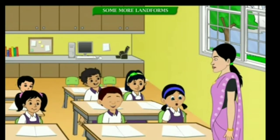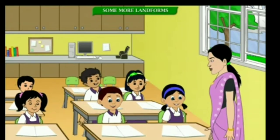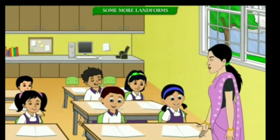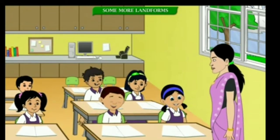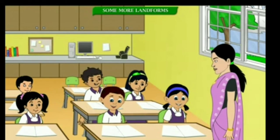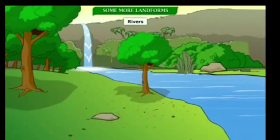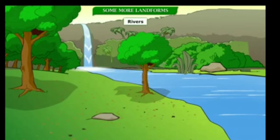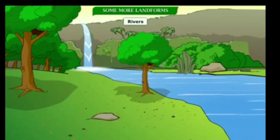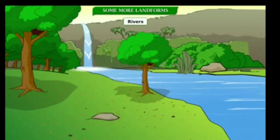Where do rivers start from? Good question, Neetu. You will have to look into the journey of a river to understand this. Rainwater and melting snow from high mountains form small streams that start flowing down the slopes. They join and form bigger streams and rivers.